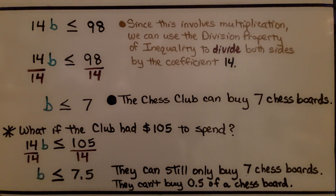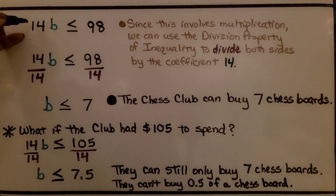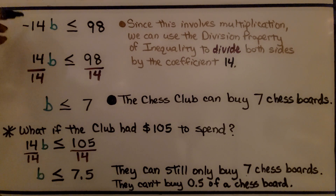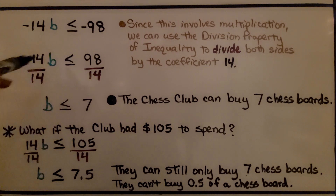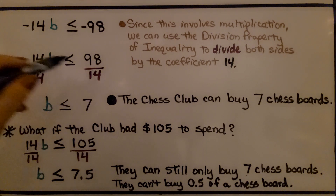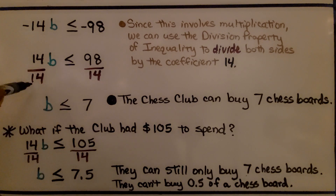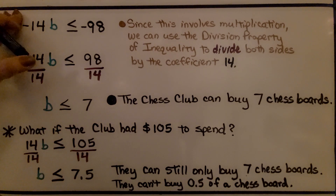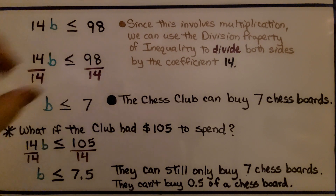The chess club can buy 7 chess boards. Note that the cost and money spent could also have been written as negative 14 and negative 98, then divided both sides by negative 14 — which would have required switching the inequality sign. But we were also able to solve it without using those negative signs.